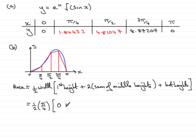Then it's plus twice the sum of the middle heights, so the middle heights will be this one, plus this one, plus this one. They're the y values that you see in the table up here.